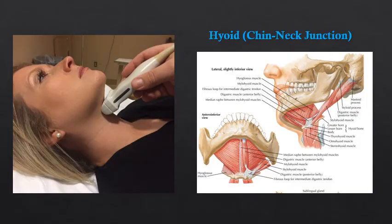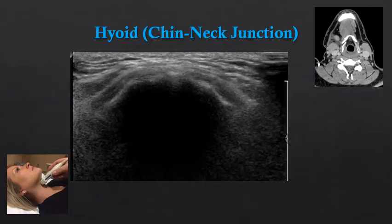If we move our ultrasound probe inferior along the chin to the chin-neck junction, we get to the level of the hyoid bone. On ultrasound, the hyoid bone appears as a thin hyperechoic line with posterior acoustic shadowing, as we see with most bones on ultrasound.